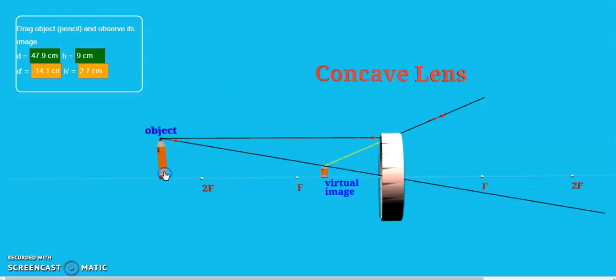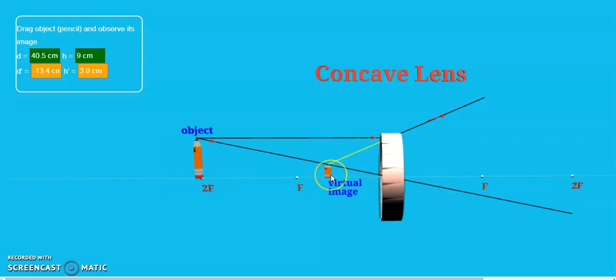All you need to remember is that wherever you change the position of an object, your image will always be smaller in size, not inverted, which you can say an erect image, and it will be in between focus and the center of the lens.